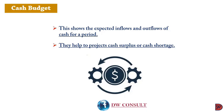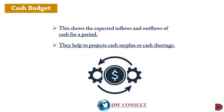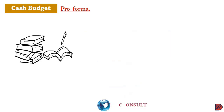Management can use cash budgets to plan ahead to meet those eventualities — arranging borrowing when a deficit is forecasted, or buying short-term securities during times of excess cash. Let's look at the pro forma for a cash budget.